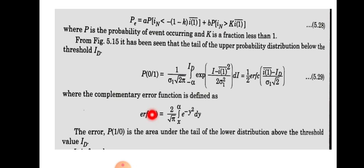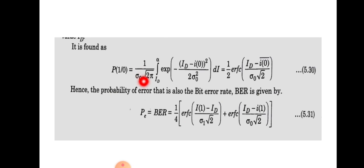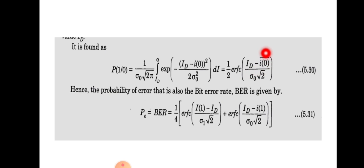The complementary error function is defined as ERFC(x) = (2/√π) · ∫(x to ∞) e^(−y²) dy. The error P(1|0) is the area under the tail of the lower distribution above the threshold id. Similarly, P(1|0) = (1 / (σ₀√(2π))) · ∫(id to ∞) e^(−(id − Ī₀)² / (2σ₀²)) di = (1/2) · ERFC((id − Ī₀) / (σ₀√2)), where id is the threshold value and Ī₀ is the mean square value of the error signal for bit 0.